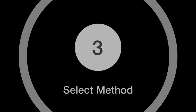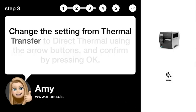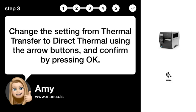Step 3: Select Method. Change the setting from Thermal Transfer to Direct Thermal using the arrow buttons and confirm by pressing OK.